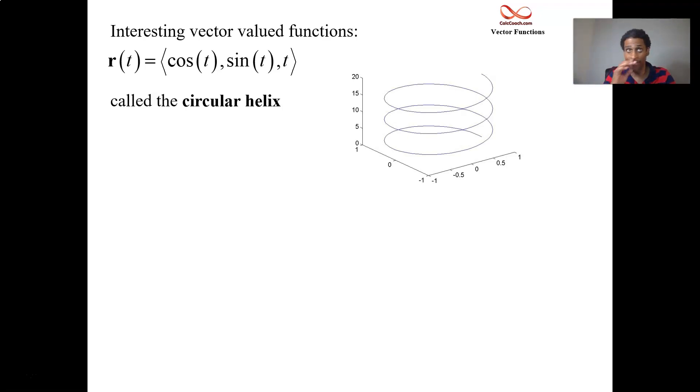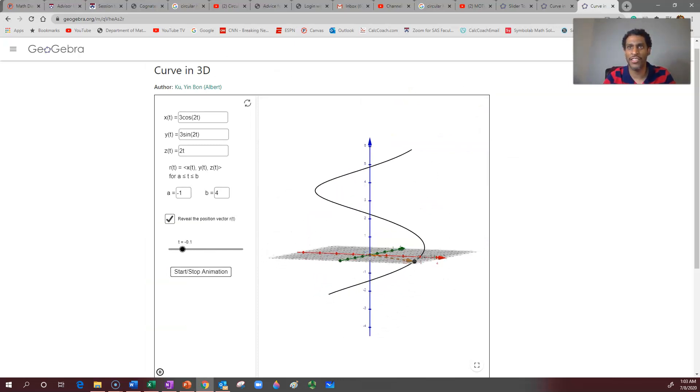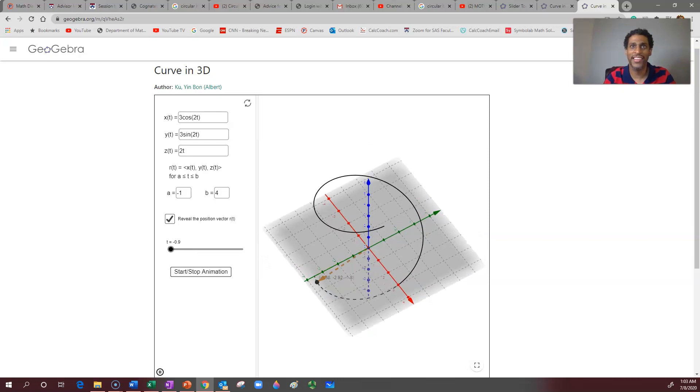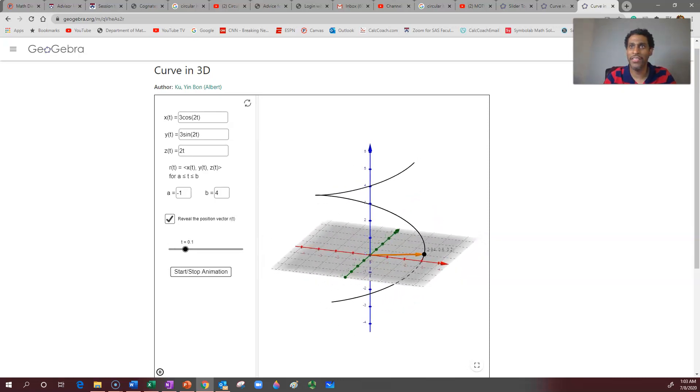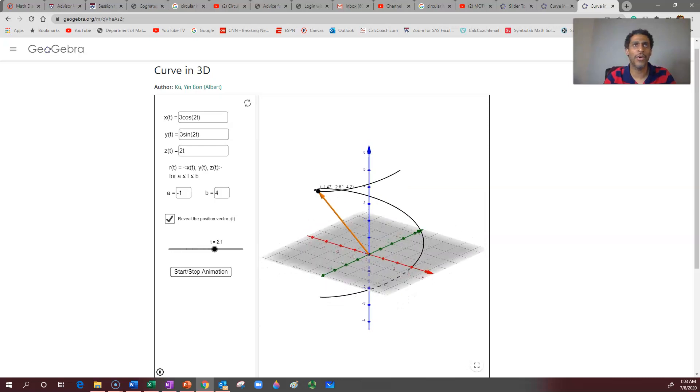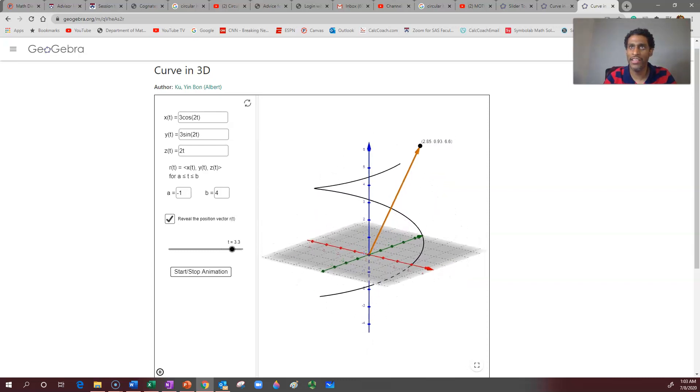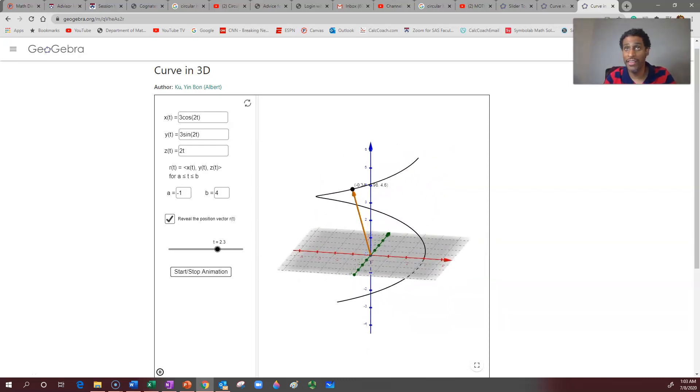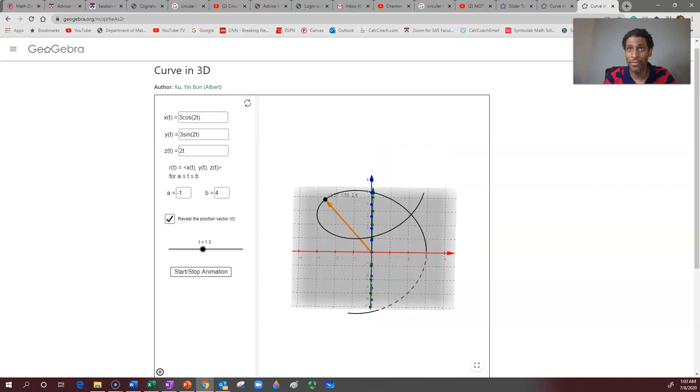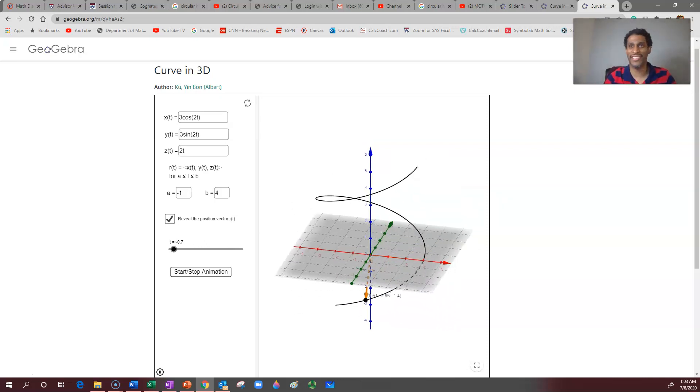Let me go to a drawing here. Animation, a static drawing doesn't do it justice. Here it is, t is negative, t is zero. I have this going at double speed at the 2t that you see there. It makes a circle of radius 3 and travels along that back and forth, up and down for t. Circular helix.